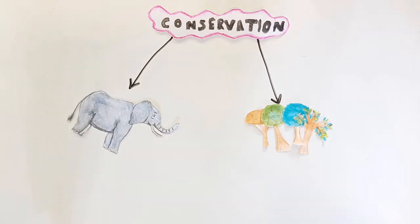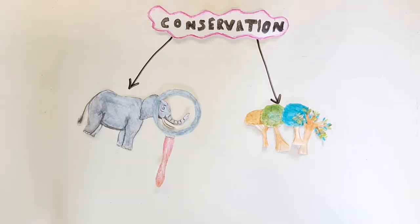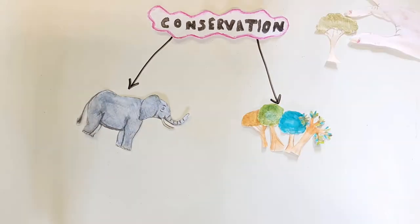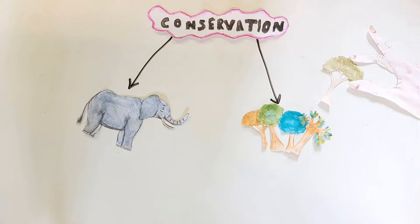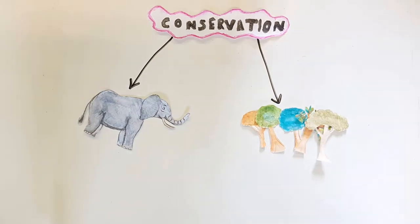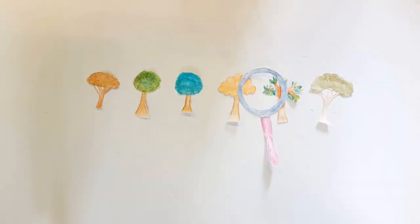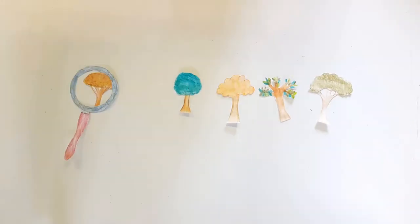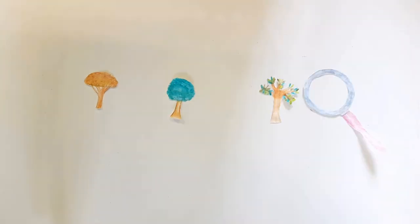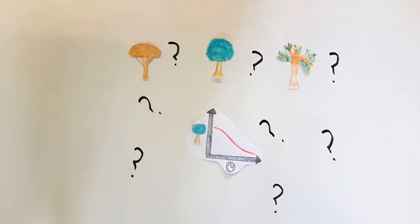Conservation of things like wild animals and their habitats need to be monitored and managed. To monitor something is to watch and record it. For example, we can monitor forests to see how many trees there are — if these trees are disappearing and going down in number, we may ask why this is happening.